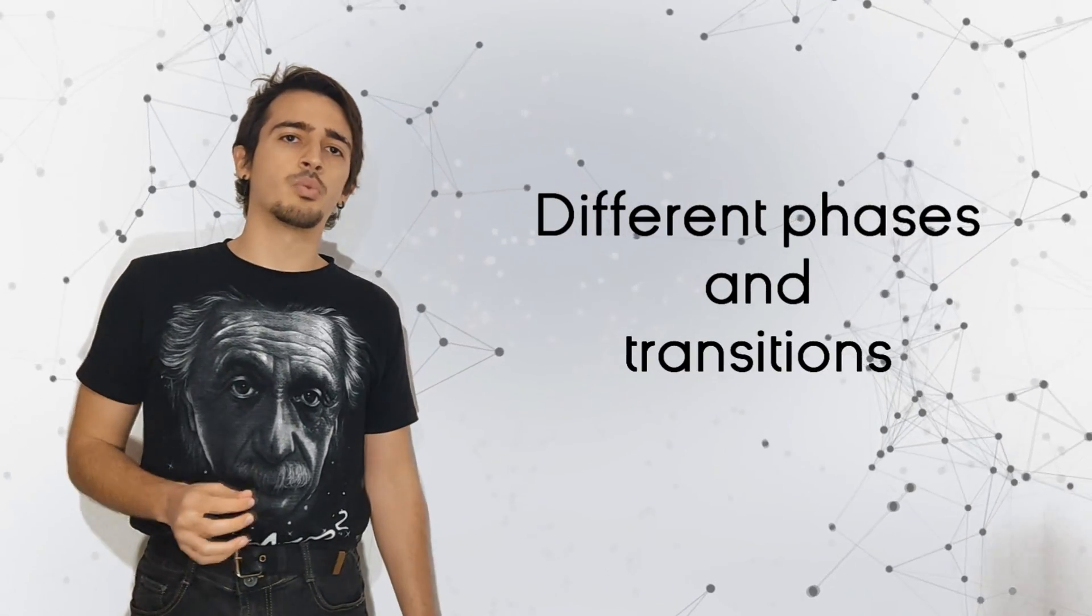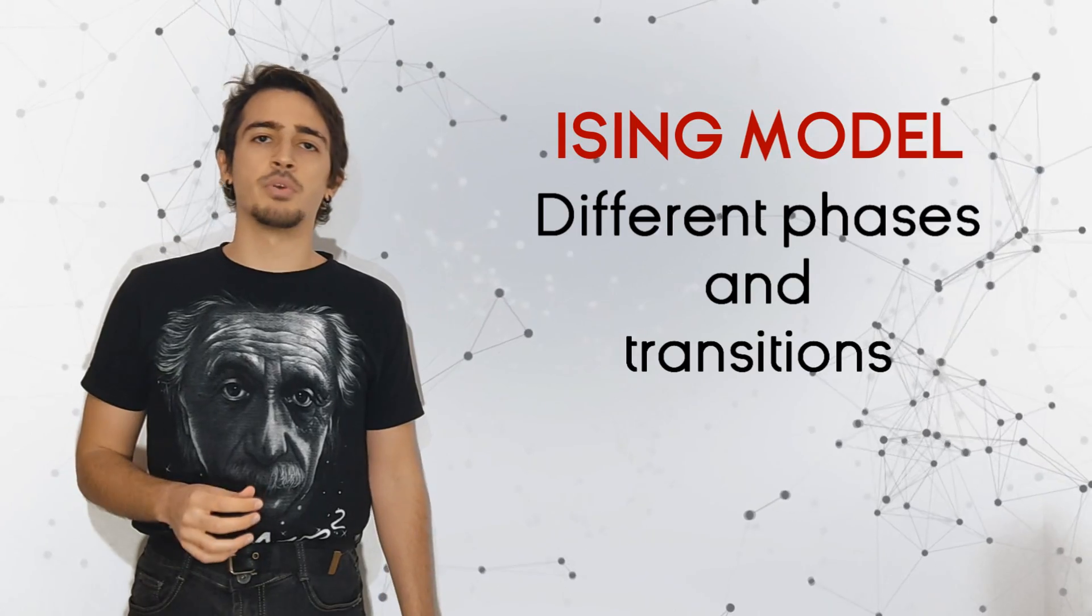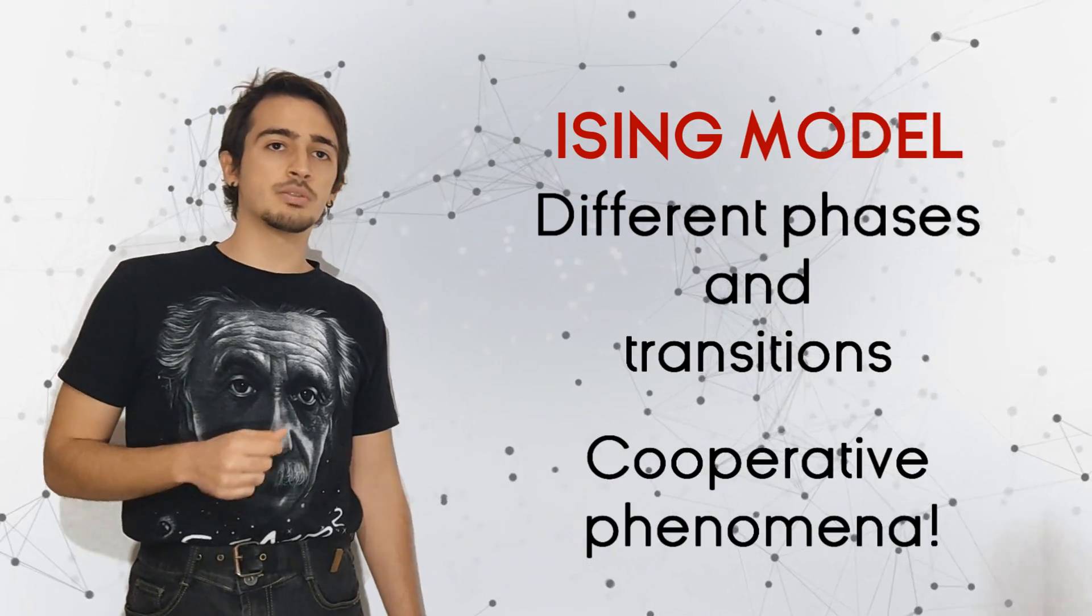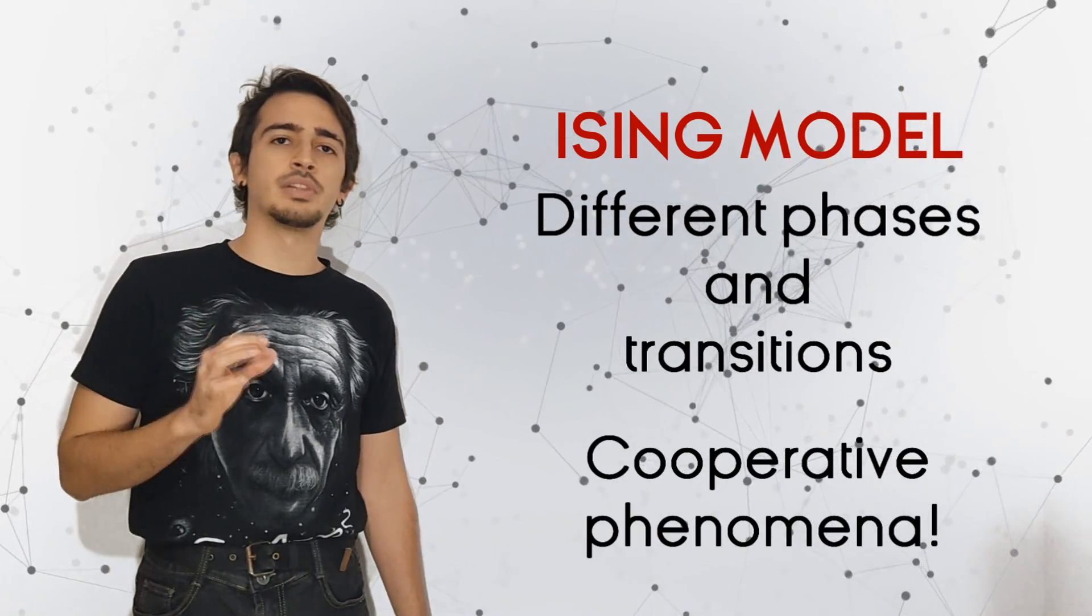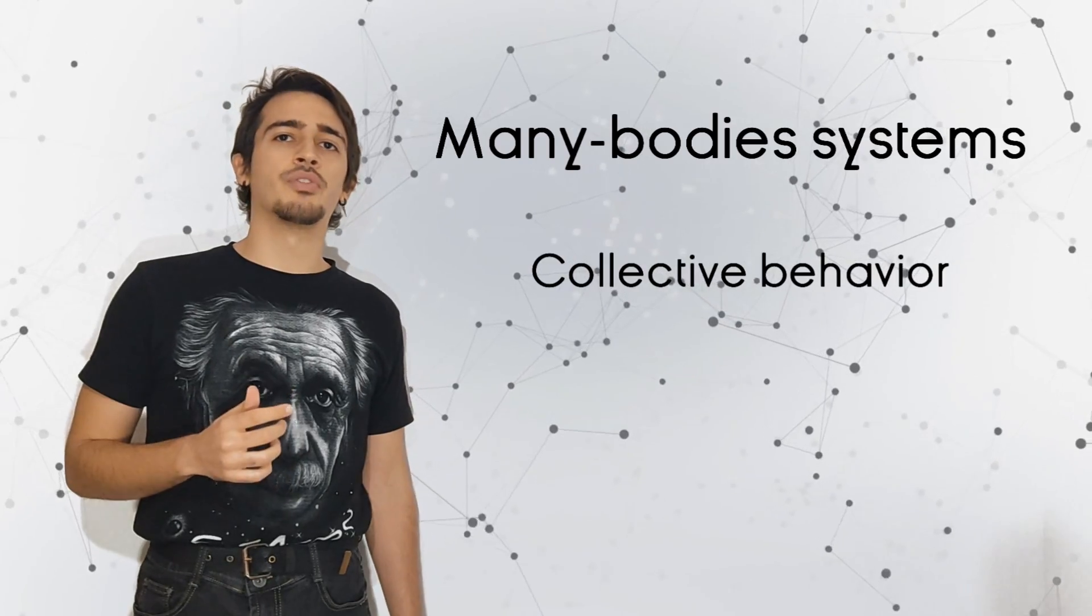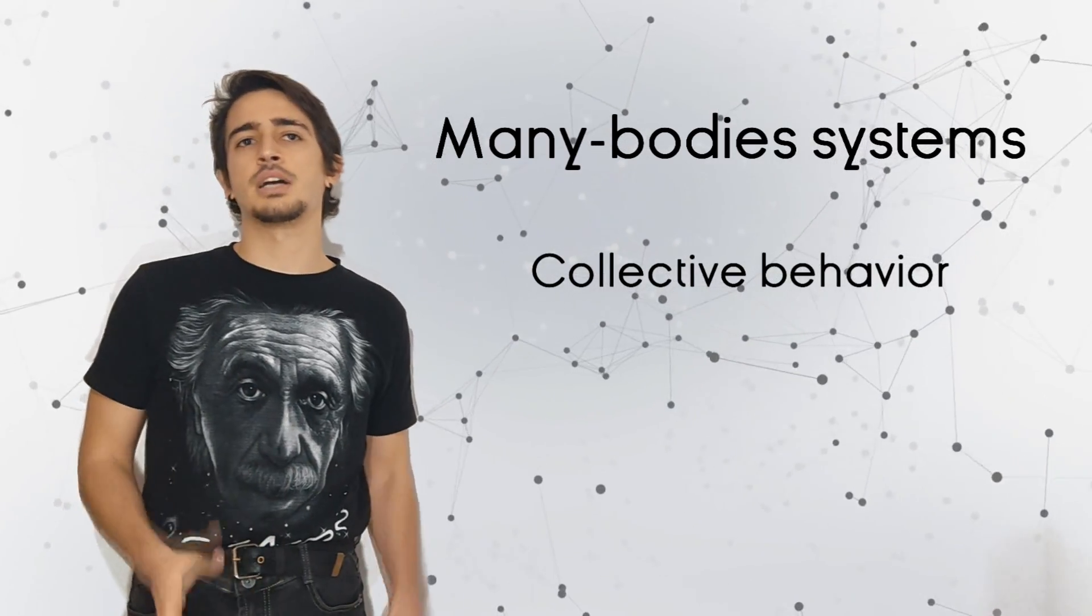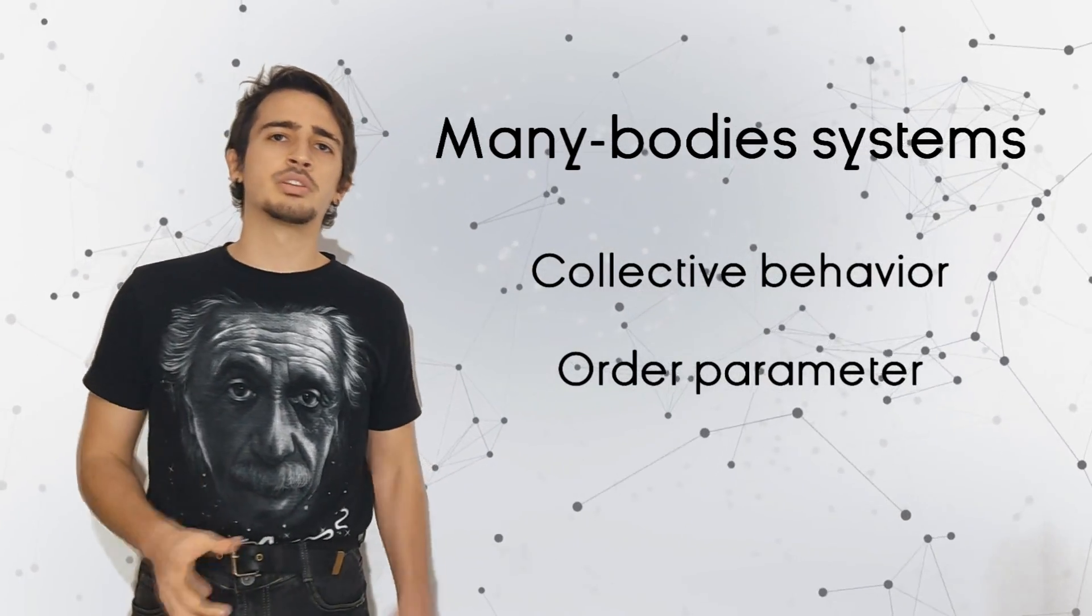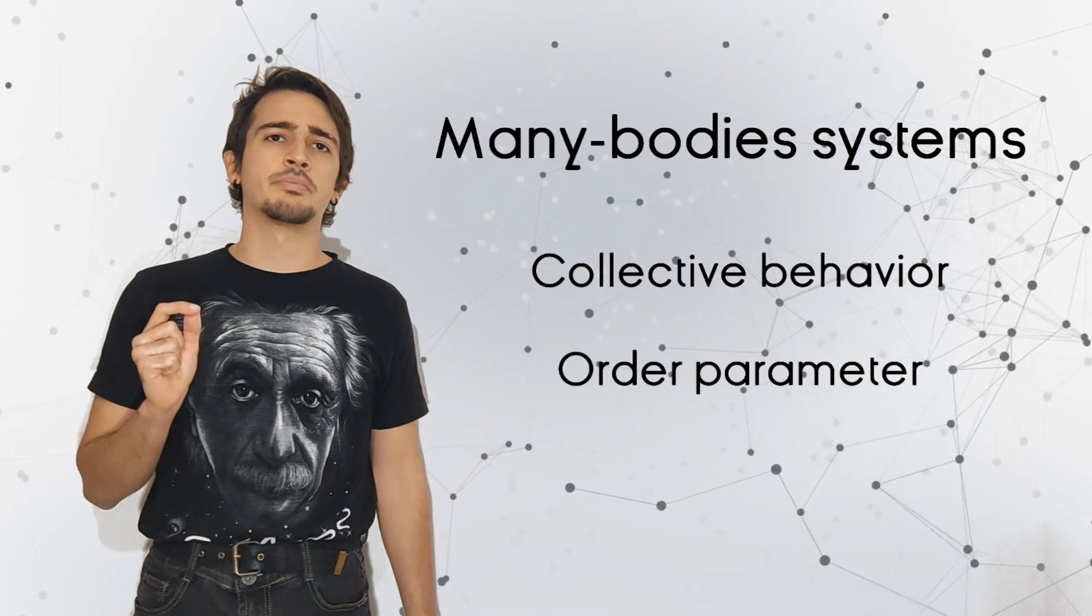However, the existence of two very different phases and the transition from one to the other is a behavior of the Ising model and many other systems, which is impossible to deduce by studying exclusively the behavior of individual electrons through the particle physics perspective. We need to study many-body systems and look for changes of the collective behavior using simple concepts as the order parameter, focusing on the interrelation of the parts, not on the parts themselves.